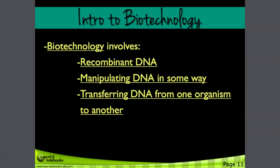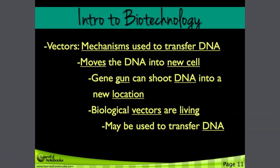Biotechnology involves recombinant DNA — manipulating DNA in some way, transferring DNA from one organism to another. So, vectors. We talked about vectors when we studied health and disease in our last unit, and we talked about the rats that were vectors during the Great Plague. They helped transport the fleas around, which were able to transmit the plague. Vectors are mechanisms used to transfer DNA — they move DNA into a new cell. Think of a gene gun shooting DNA into a new location. Biological vectors are living and may also be used to transfer DNA.